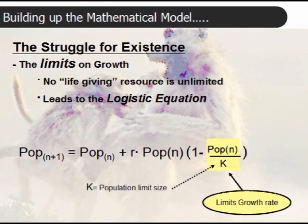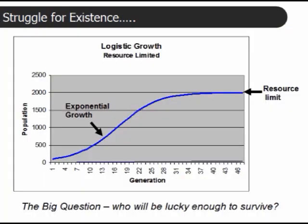And you can see in the area in yellow, that's the term that as you get closer and closer to the number K, the population limit, the growth rate falls off, and as a matter of fact, can actually go negative.